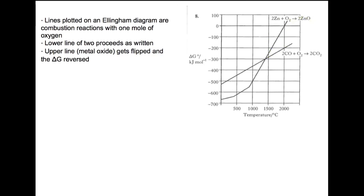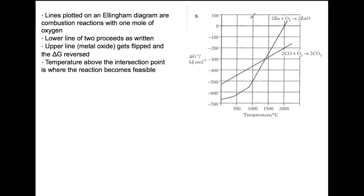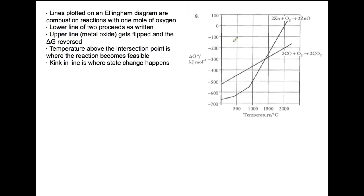Ideally, when we're looking at metal extraction, the upper line is the metal reaction. You can see that this is written in the form of metal combustion. However, we're trying to extract the metal from the oxide. The temperature at which the two lines intersect is the point at which the reaction becomes feasible. Where you see kinks in the line, you have changes of state.